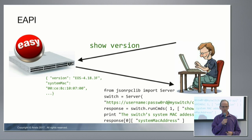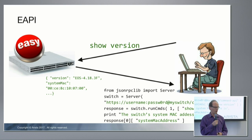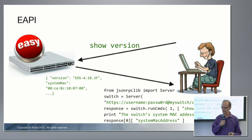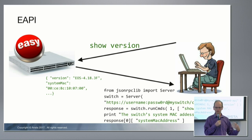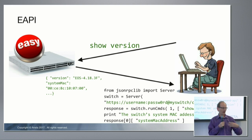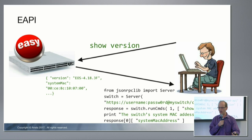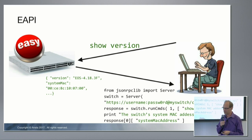The first programmability platform is called eAPI. These are the external APIs for EOS. By external, I mean the software that the customer is creating to automate their network is running outside the switch — external from our box. You can write the software and run it anywhere you want on your management platforms.